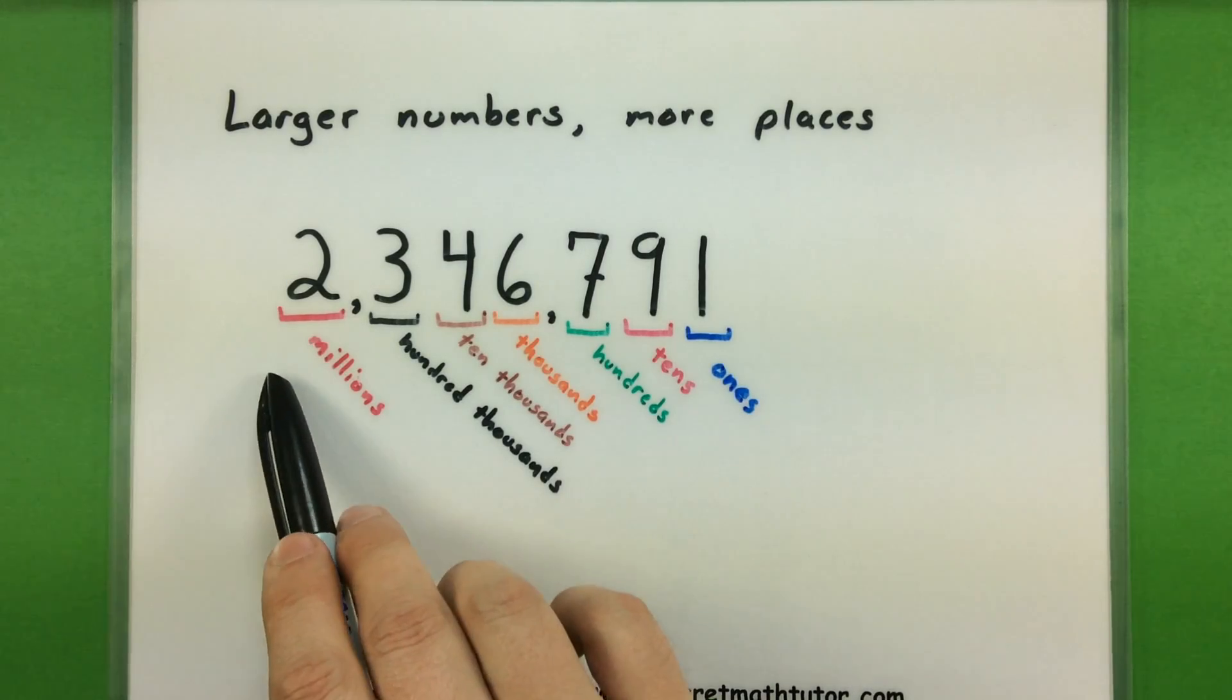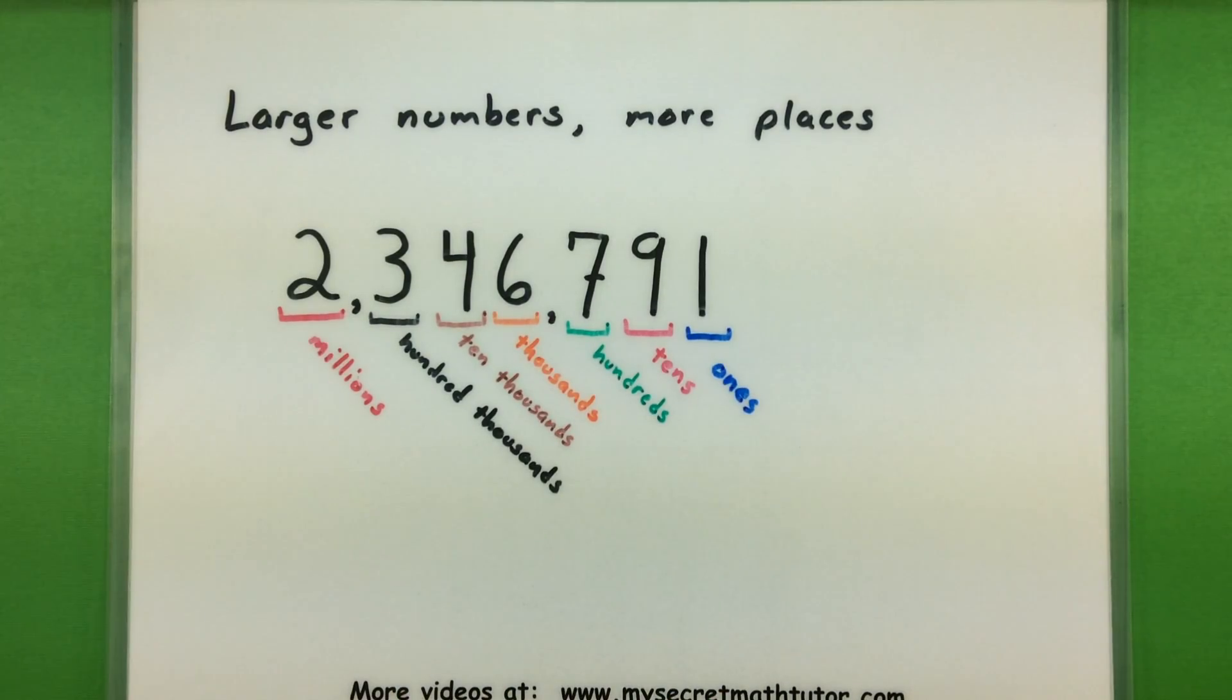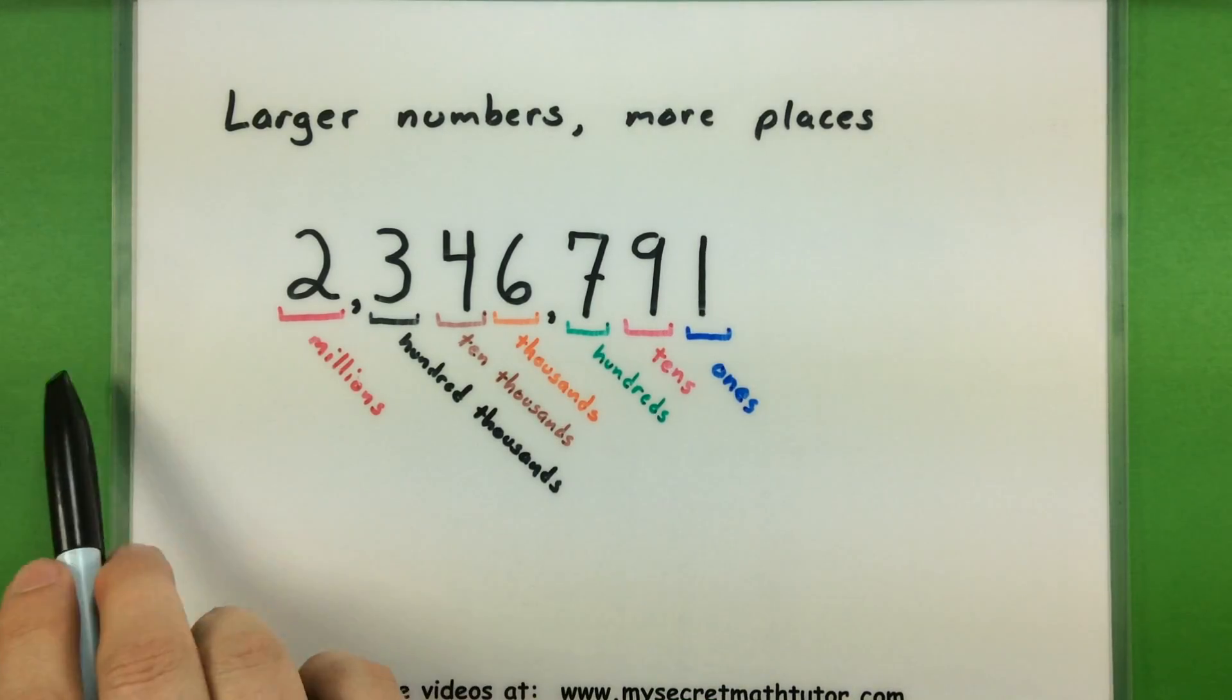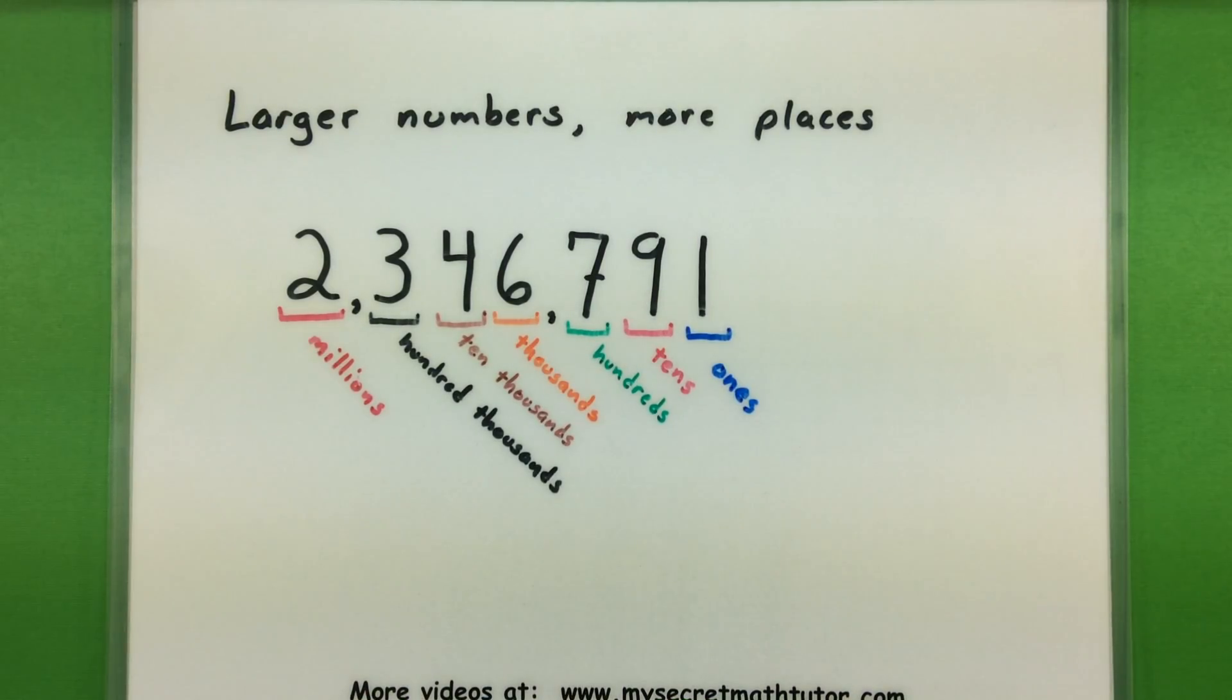And we could even build larger numbers beyond this, and I would simply have to identify more place values. So I could have a ten millions place, a hundred millions place, all the way up into the trillions and billions, and really just keep going. The key is by looking at where that number is located to see what place value it's actually in.